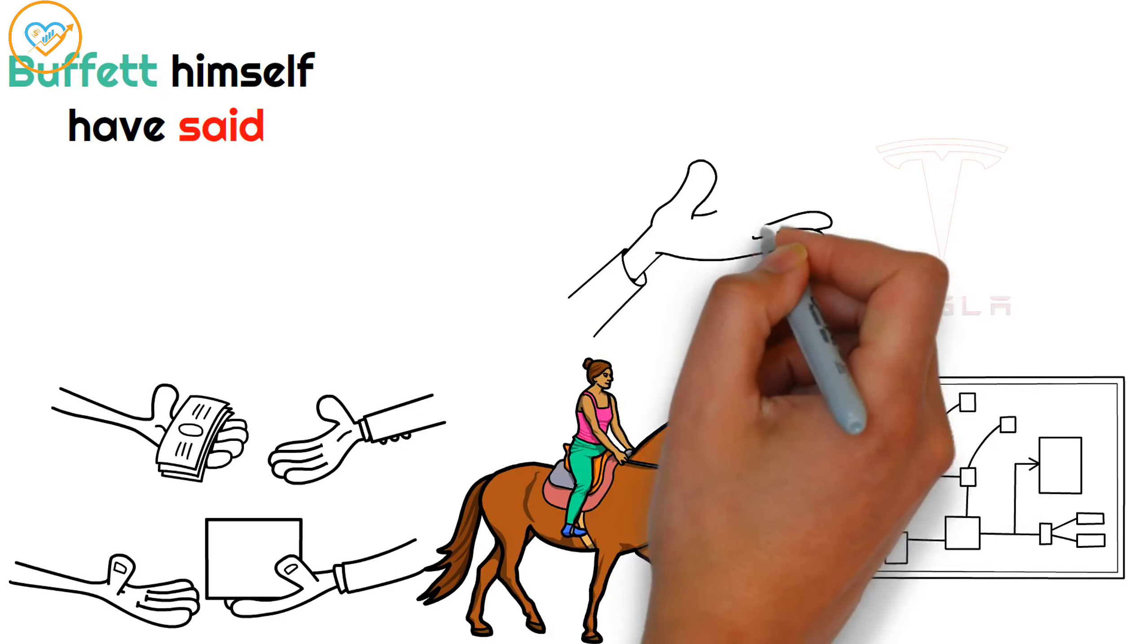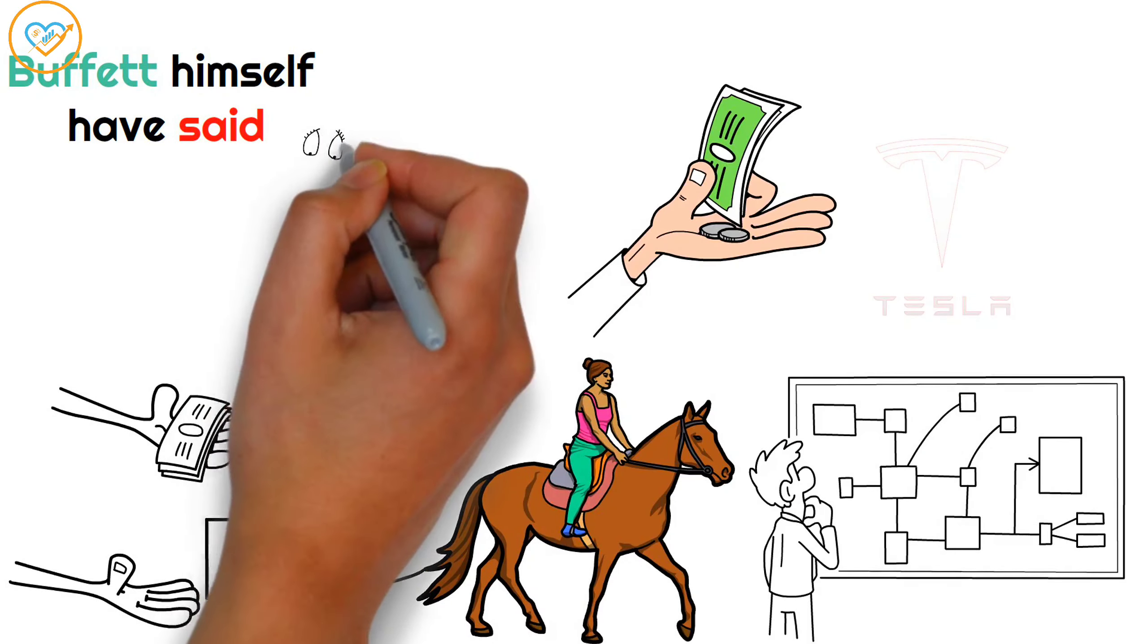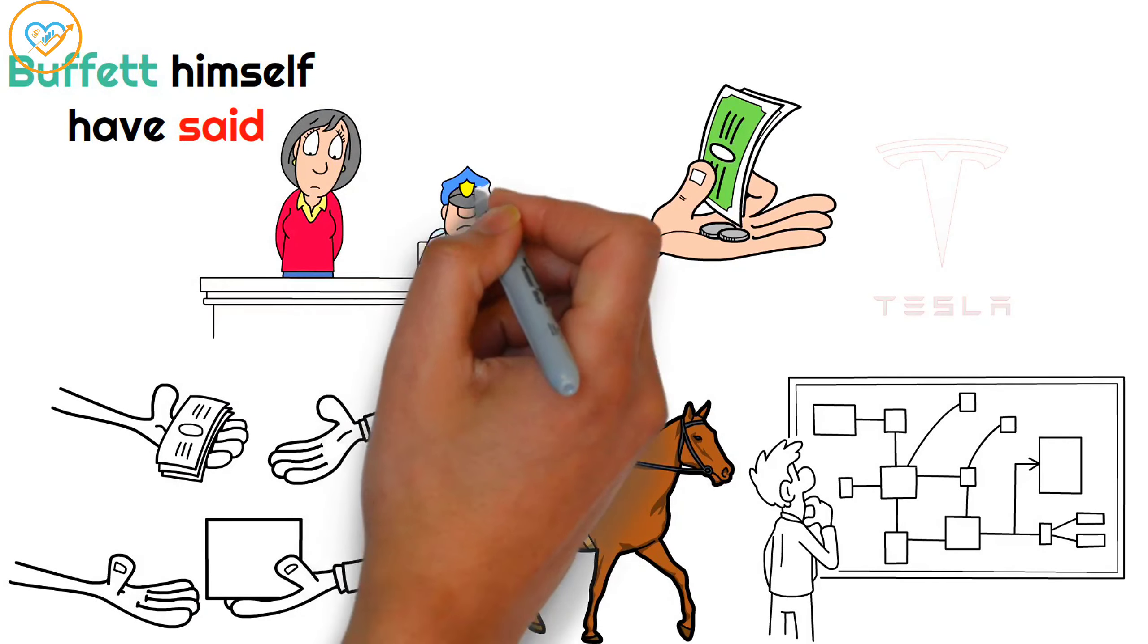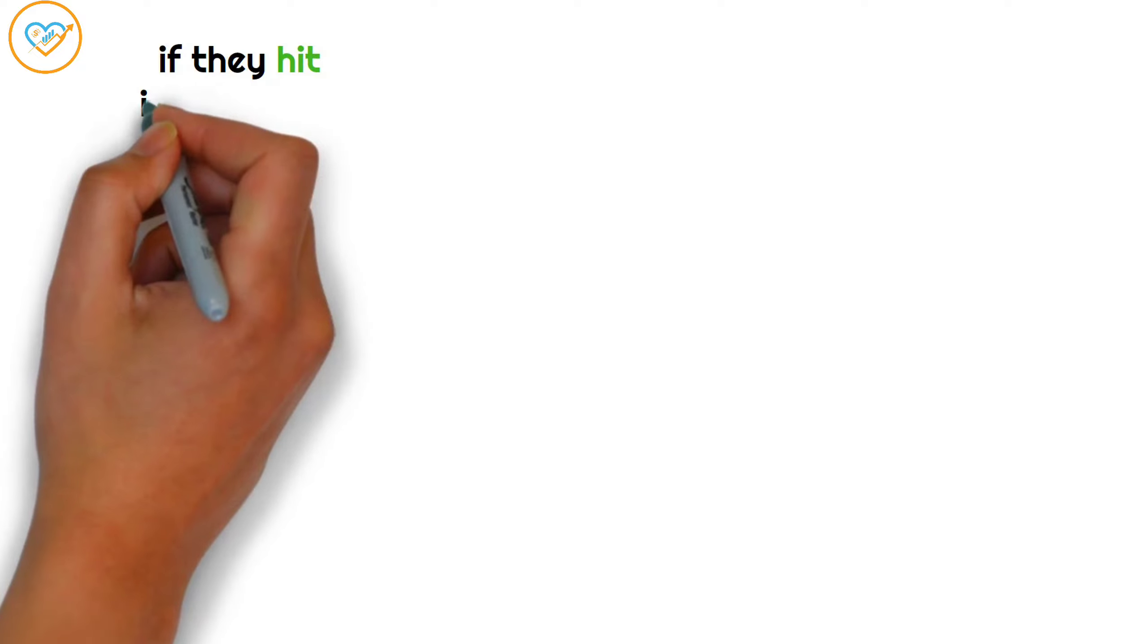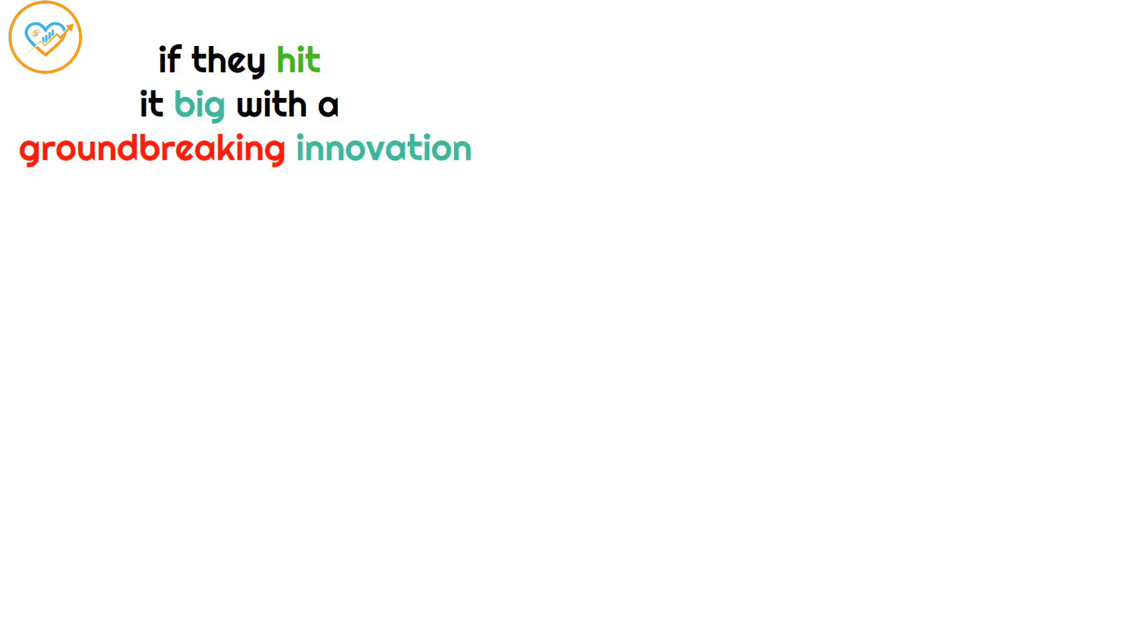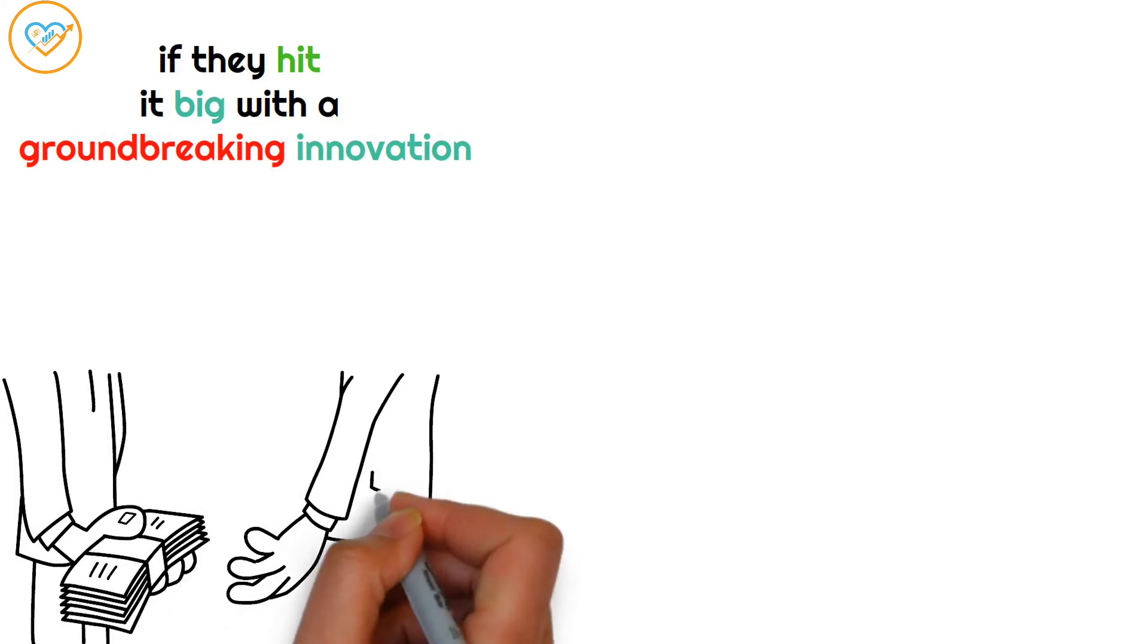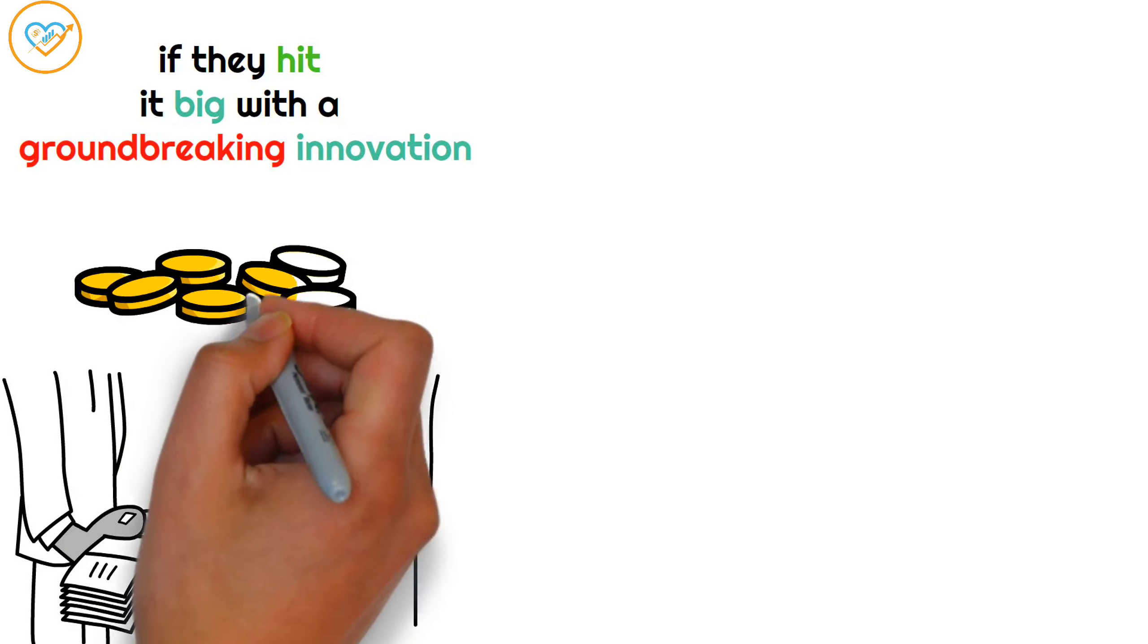Take Tesla, for example. You could pour all your cash into their stock. But if they hit a difficulty like a major product issue or legal trouble, you're in for a rough ride. On the flip side, if they hit it big with a groundbreaking innovation, you're rolling in money. People stocks offer higher potential returns, but come with equally high risks.